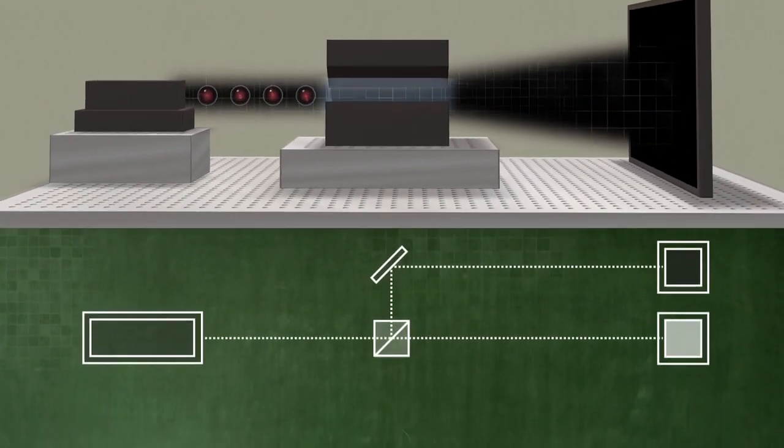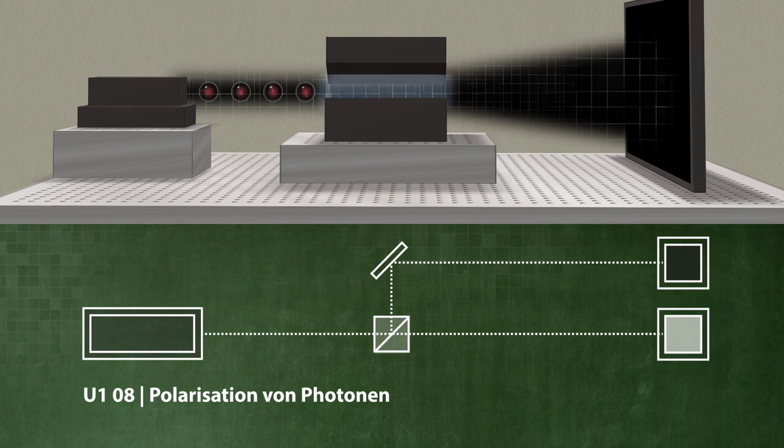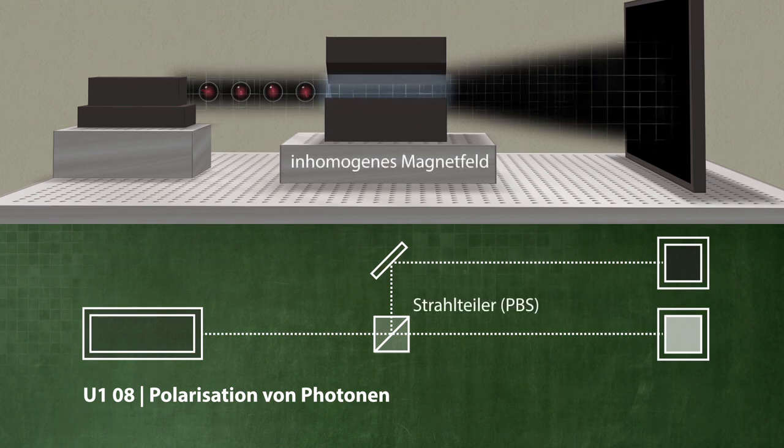In fact, there is a close connection between this experiment with a single electron spin and the experiment with single polarized photons. Here, the polarizing filter corresponds to the inhomogeneous magnetic field.